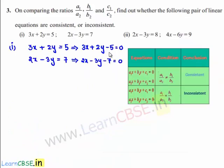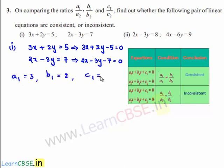Comparing these two equations with the standard equations a1x plus b1y plus c1 is equal to 0 and a2x plus b2y plus c2 is equal to 0, we get a1 is equal to 3, b1 is equal to 2, and c1 is equal to minus 5. In the similar way, a2 is equal to 2, b2 is equal to minus 3, and c2 is equal to minus 7.